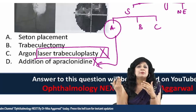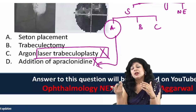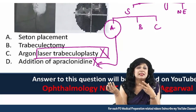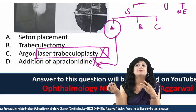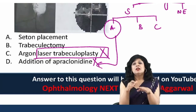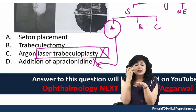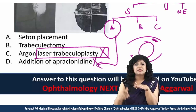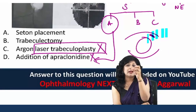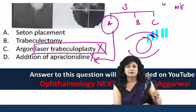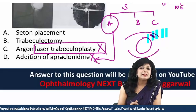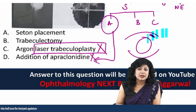We are left with trabeculectomy and seton placement. Trabeculectomy is a filtration operation — a fistula created between the anterior chamber and the subconjunctival space to allow free aqueous drainage. Whenever anti-glaucoma drugs, alone or in combination, fail to give the desired effect, trabeculectomy or filtration surgery is indicated. Sometimes the bleb created can become fibrosed, causing surgical failure. Seton placement is done only after failure of trabeculectomy.